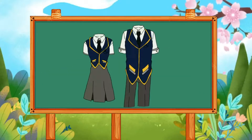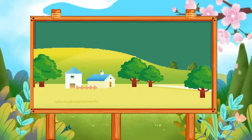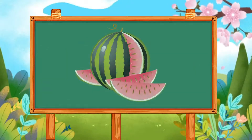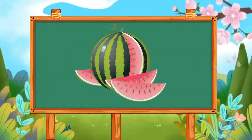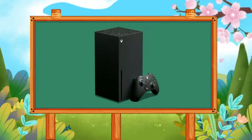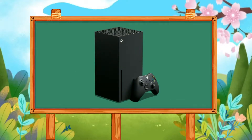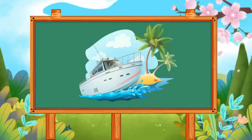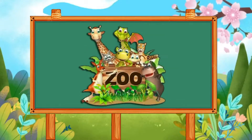U is for uniform. V is for village. W is for watermelon. X is for xbox. Y is for yacht. Z is for zoo.